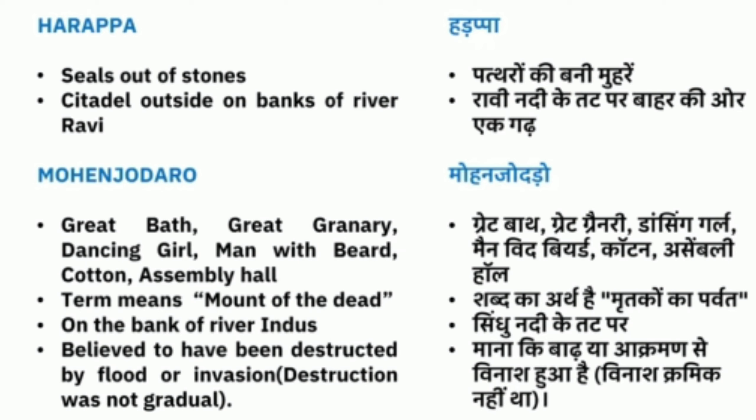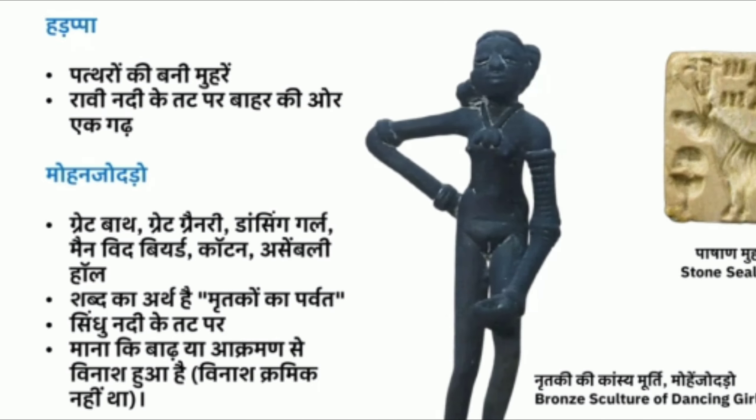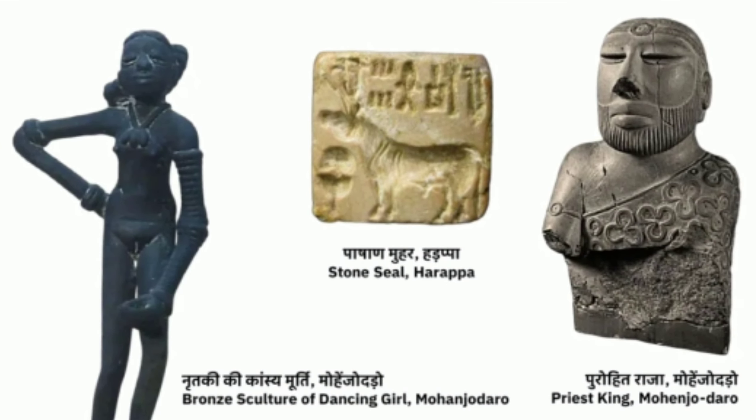Satsang (Assembly Hall) - sabha ka arth hai 'mriiton ka tila.' Mohenjo-daro Sindhu nadi ke tad par sthit tha. Maana jaata hai ki iska vinaash Aryan akraman se hua hai, lekin vinaash kramik nahi tha. Mohenjo-daro se ek purohit raja (priestly king) ki murtiya bhi prapt hui hai.